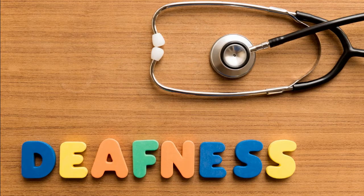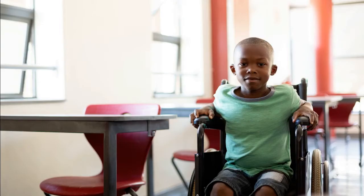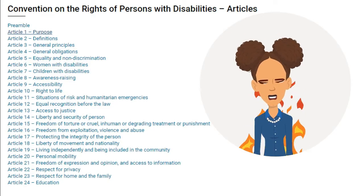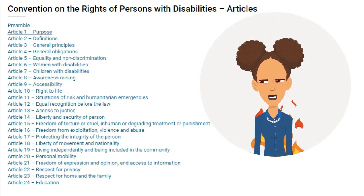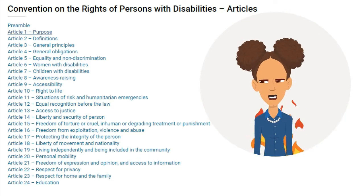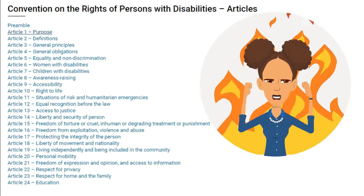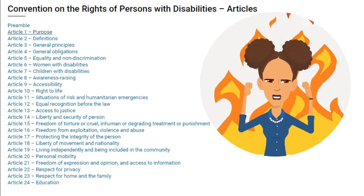However, this is indirect discrimination because public schools are prohibited from denying them admission based on their disability. The Act fails in upholding Article 24 of the Convention on the Rights of Persons with Disabilities, which provides for education for persons with disabilities, in two ways.